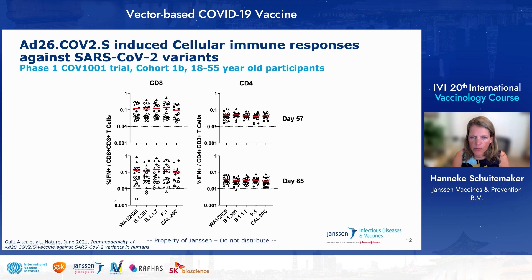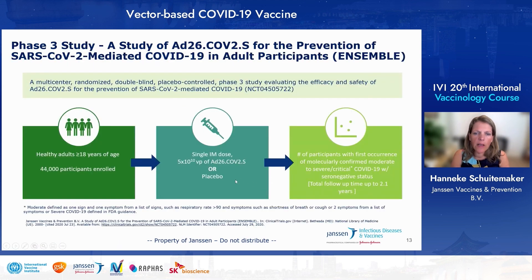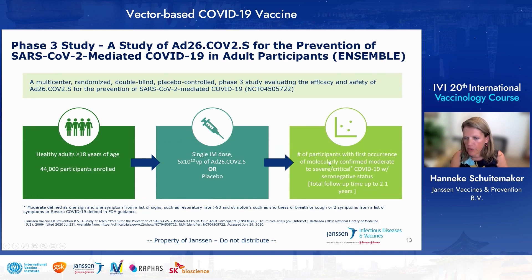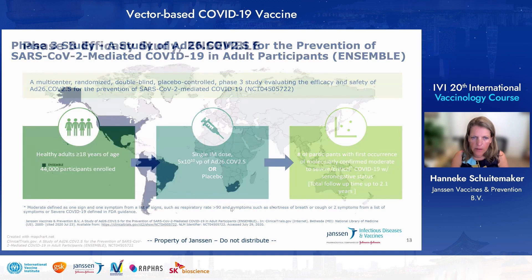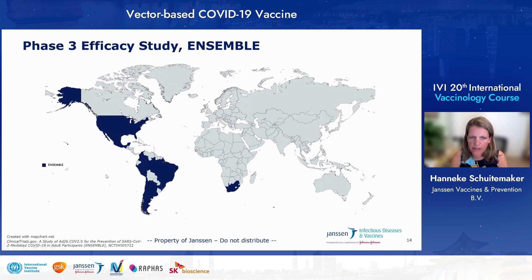Good coverage of variants was also seen in the T-cell compartment, with very good coverage of all variants tested for both CD8 T-cell and CD4 T-cell recognition. In the phase three study ENSEMBLE, we tested a single dose of Ad26.COV2.S at 5×10^10 virus particles versus placebo, enrolling adults above 18 years of age, with around 44,000 participants enrolled. The endpoint was molecularly confirmed severe critical COVID-19 in individuals who were seronegative at baseline. The study was conducted across three continents: North America, South America, and South Africa.